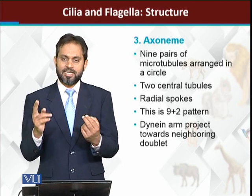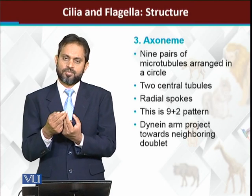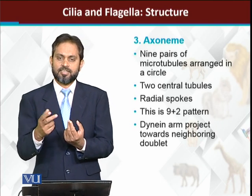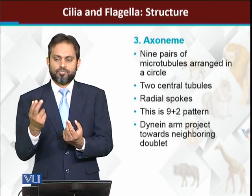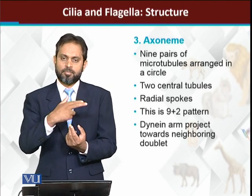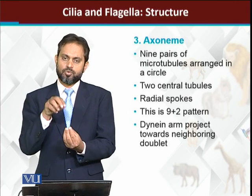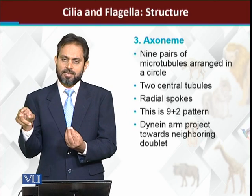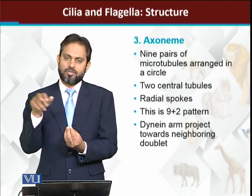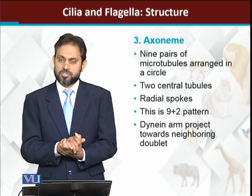The outer doublets connect to the central microtubules through a thread-like structure called the radial spoke. This is similar to a bicycle wheel - the outer rubber part of the tire represents the nine doublets, the central hub represents the two central microtubules, and the wires connecting the outer rim to the center represent the radial spokes inside cilia and flagella.